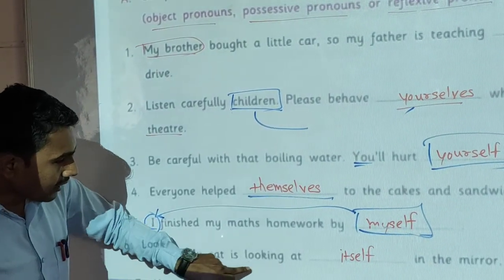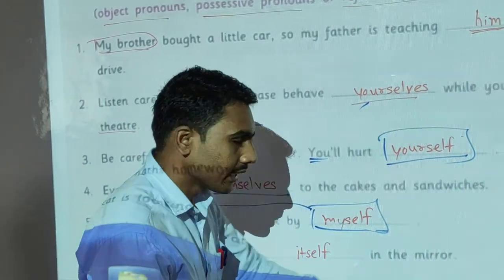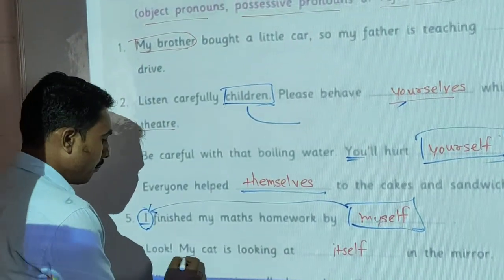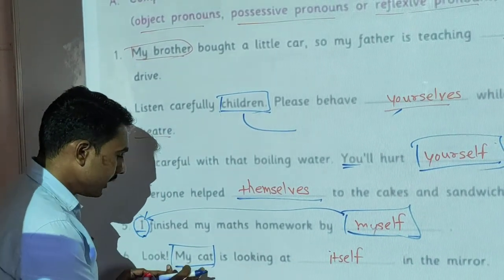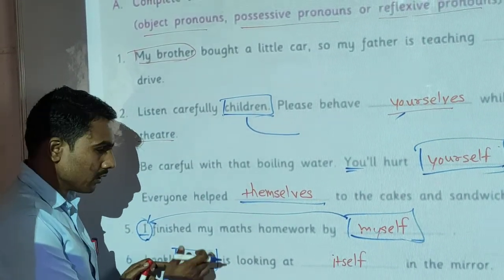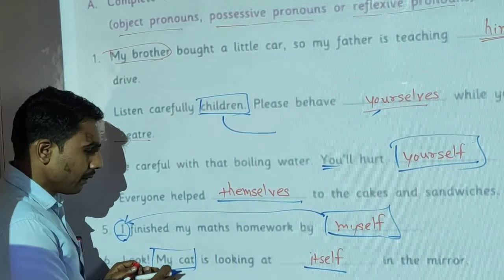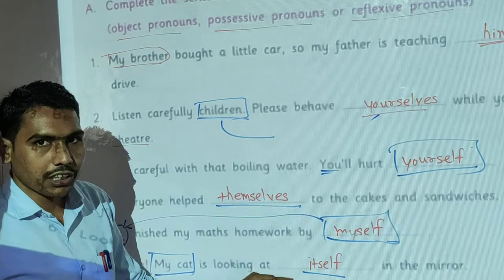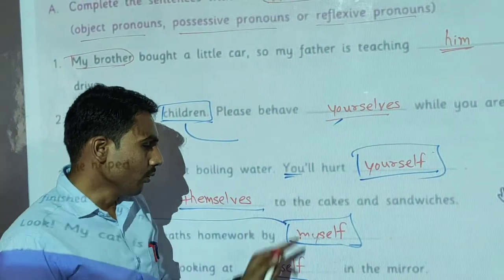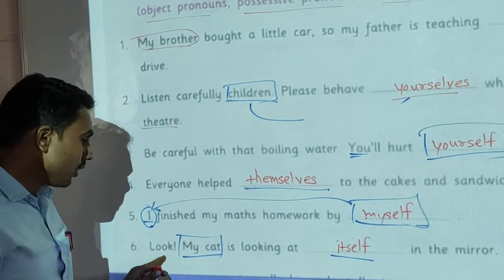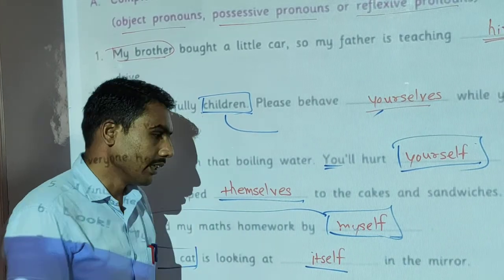My cat is looking at itself in the mirror. In this example, 'my cat' is third person and it is one animal. So we use 'itself'. When any animal is there, we use generally 'itself'. It is also a reflexive pronoun. My cat is looking at itself in the mirror.